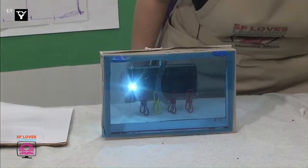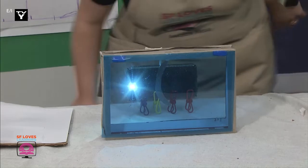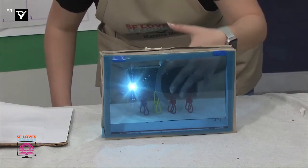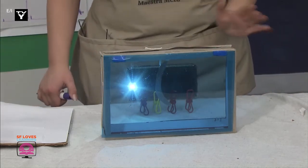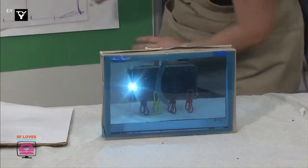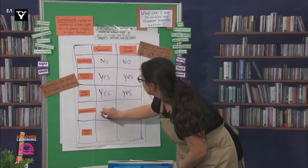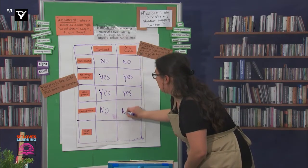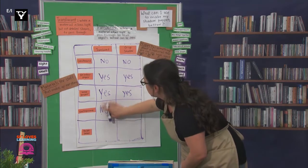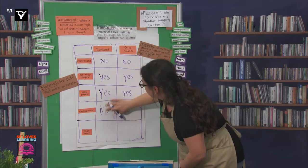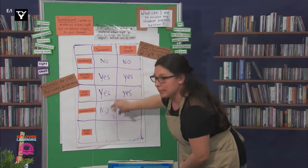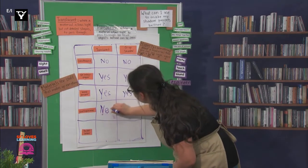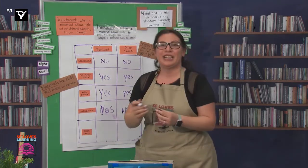Do you think the cellophane is transparent? I agree. We can see all the details and not really any shadows. Translucent? No. Crisp shadow? No. Oh wait — it is translucent because the light still comes through. I'm sorry, I made a mistake, scientists.